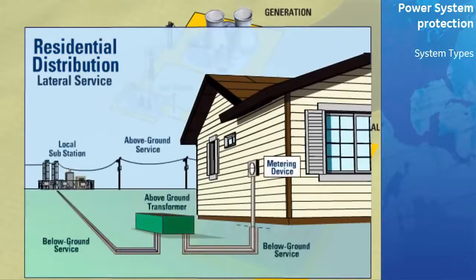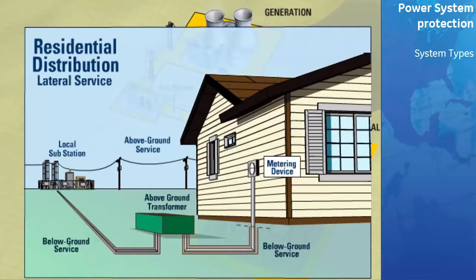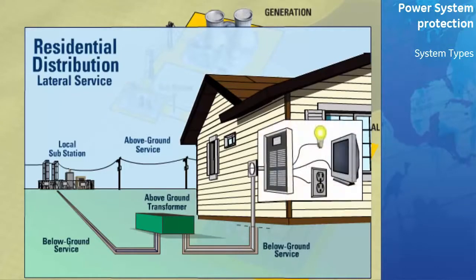From the substation, the residential power lines take the power above or below ground to a transformer, which steps the single-phase voltage down to a suitable level for home use. From the transformer, the power then enters the home through a metering device and is then routed to a load center, from which power is routed to different areas of the home.